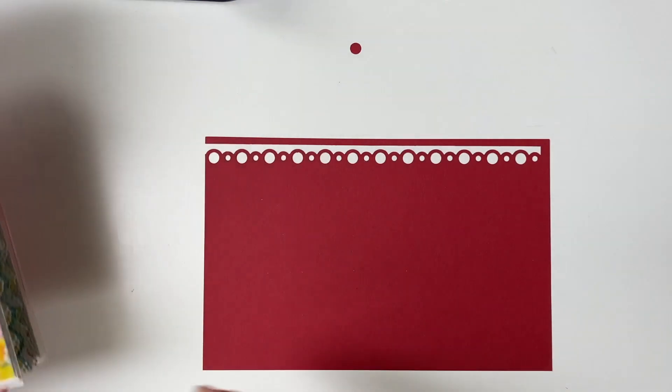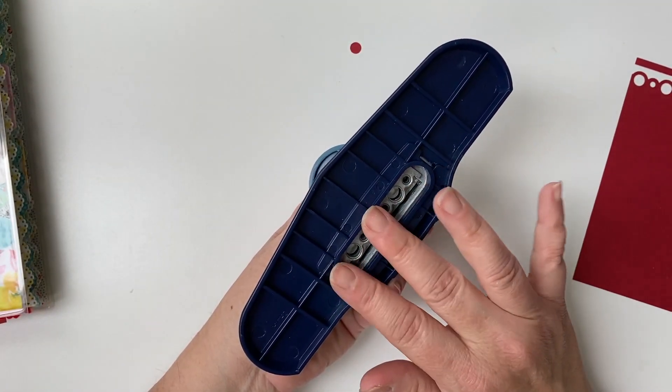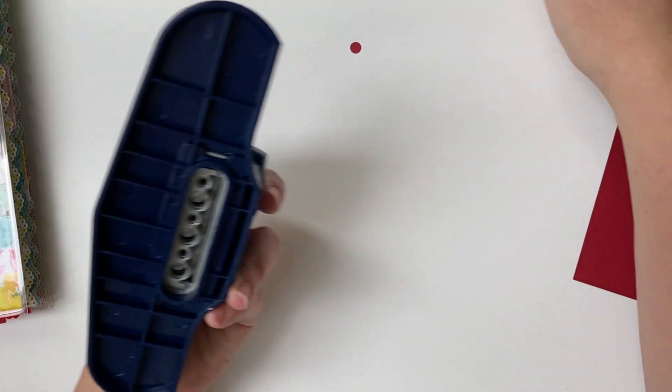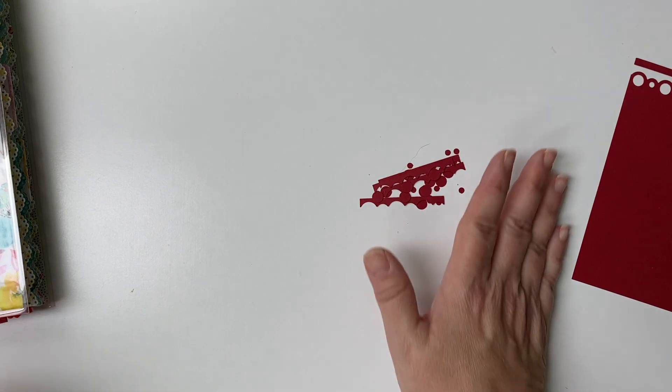These punches do not have a little thing on the back to catch all the little stuff, so you just end up having to sweep that off anyway.